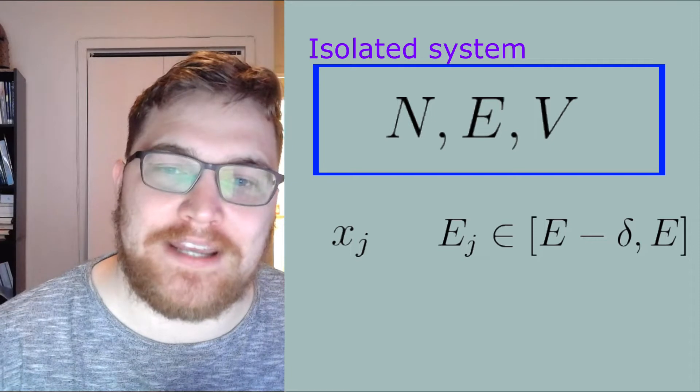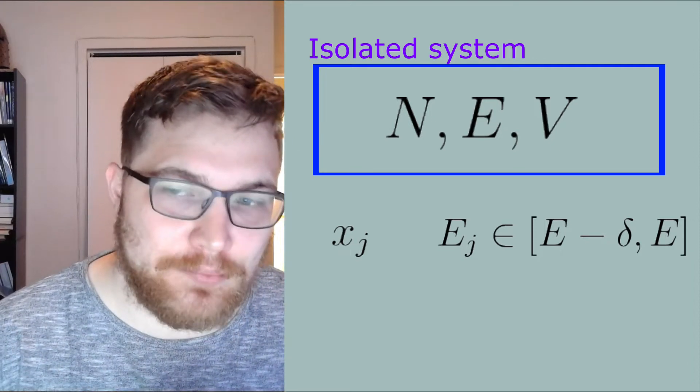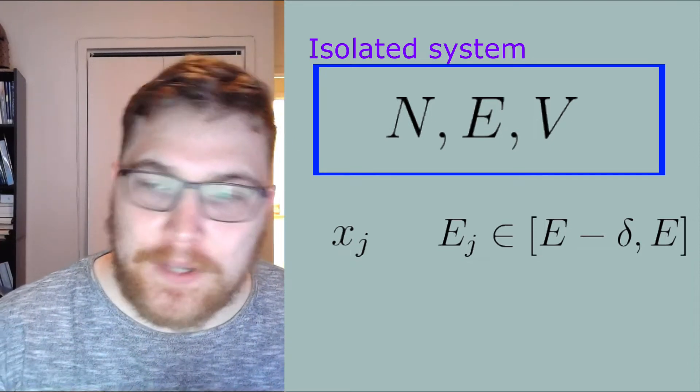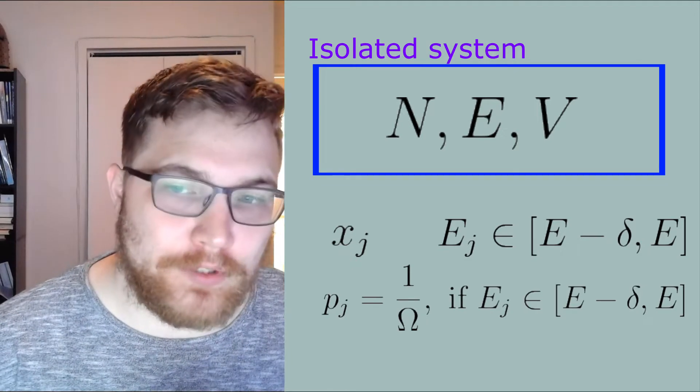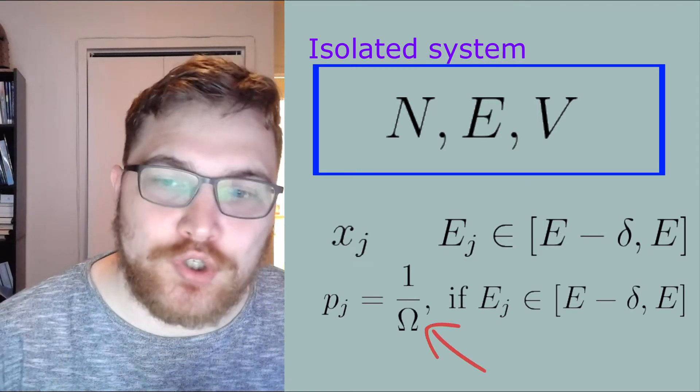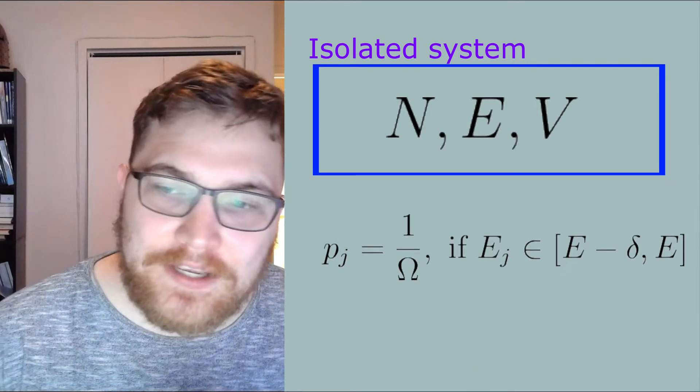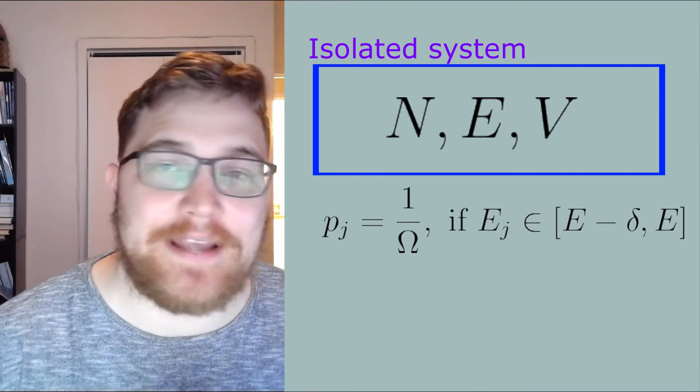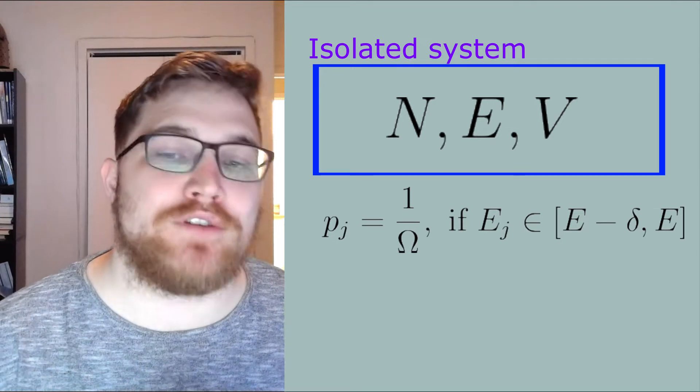Here omega is the number of energetically accessible microstates. If we label the energies as Ej, the expression for the expectation value of energy is given by the following expression.